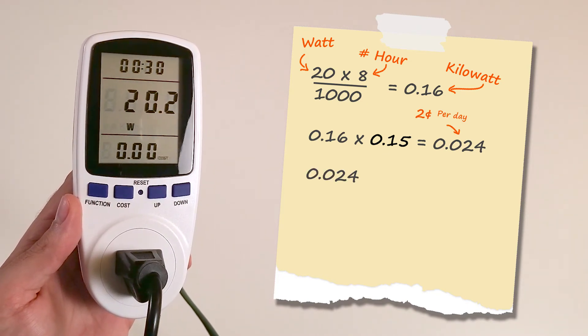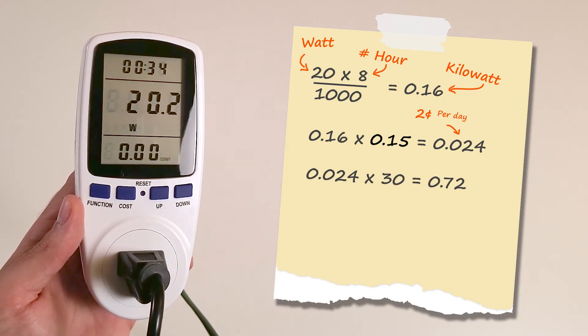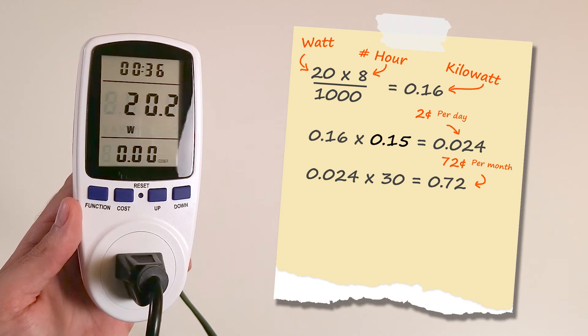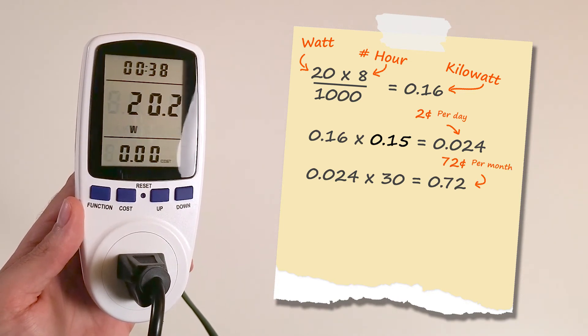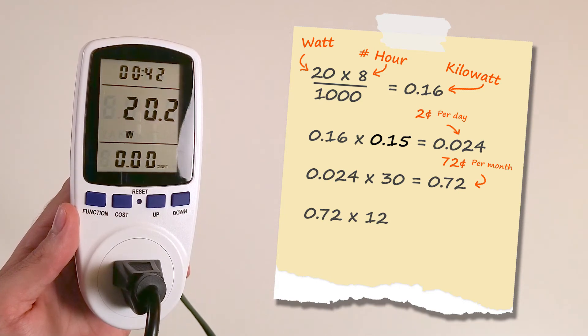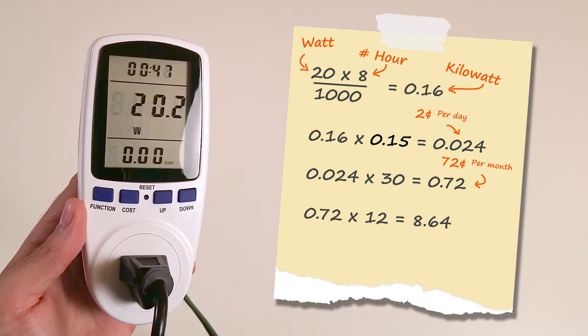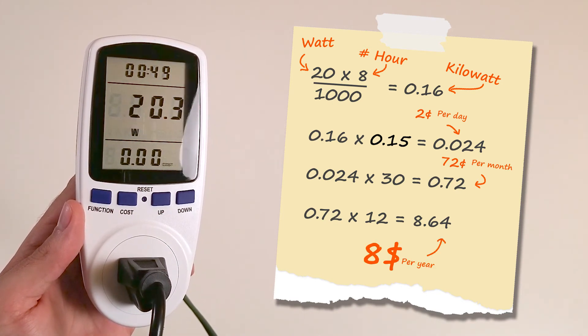And then you take 0.24, multiply by 30, equals 0.72. That means it costs 72 cents per month. And then you take that 0.72, multiply by 12, equals 8.64. That means my light, in this case, costs $8 approximately per year.